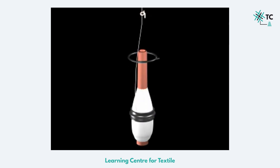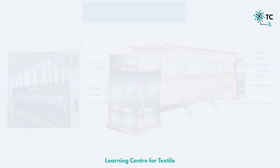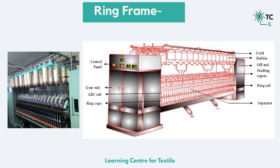Let us now move further and understand the whole process from the start. This process of ring spinning is carried out on a ring frame, which looks somewhat like this. Here is a diagrammatic representation of the same. The long central section of the machine, on which the production is actually carried out, consists of longitudinal members like spindles and drafting rollers, which extend over the complete machine length.